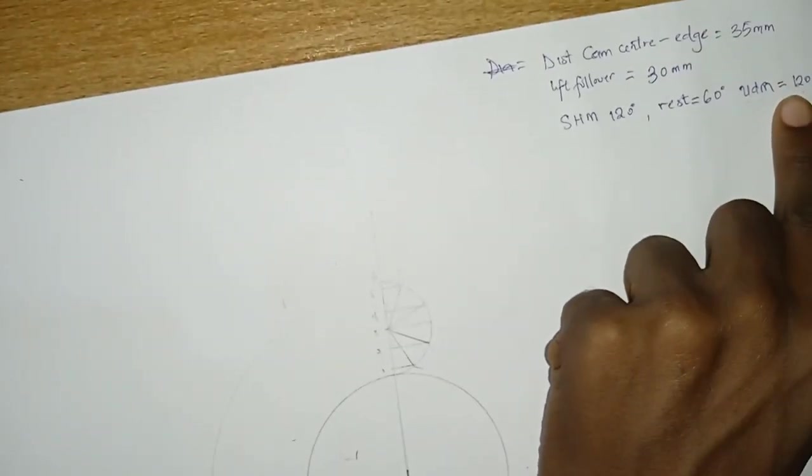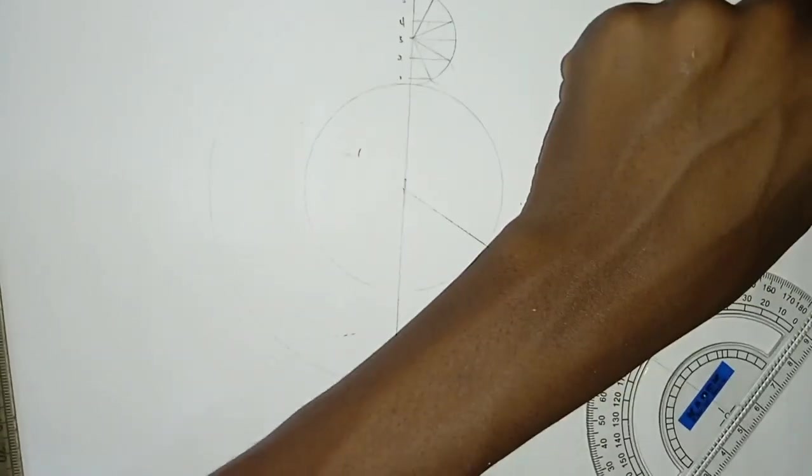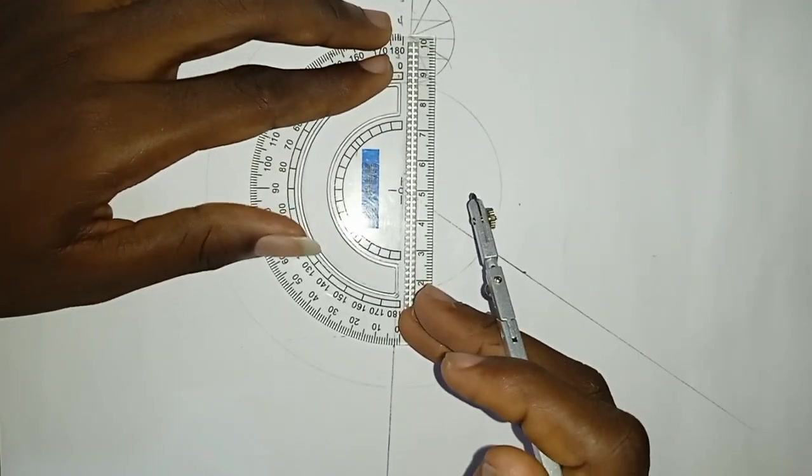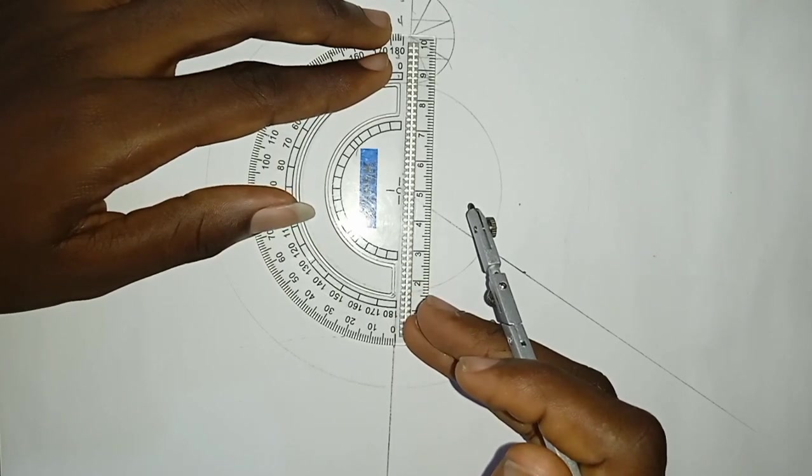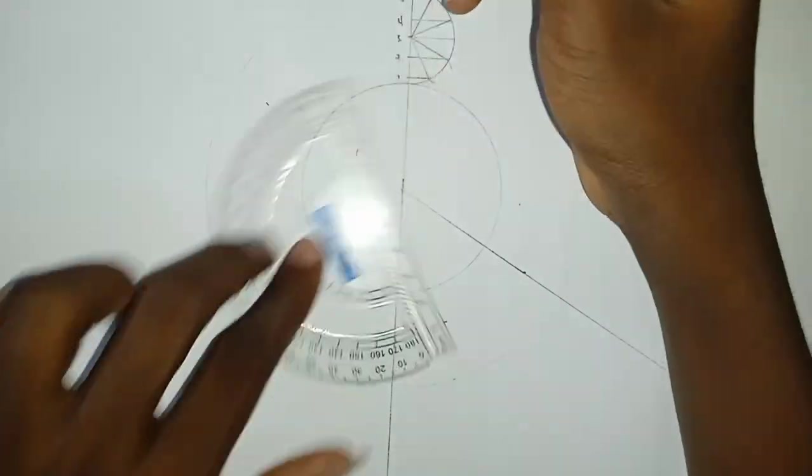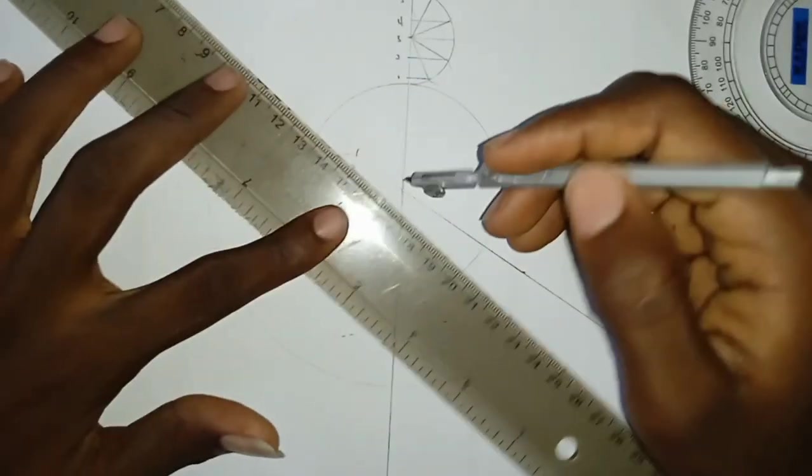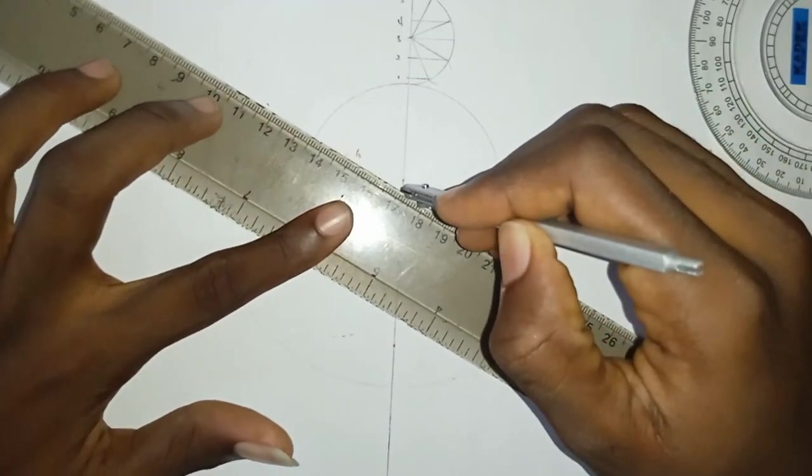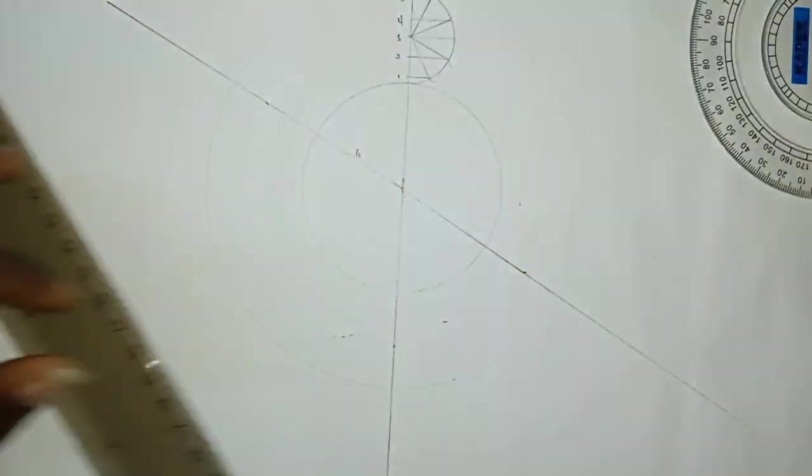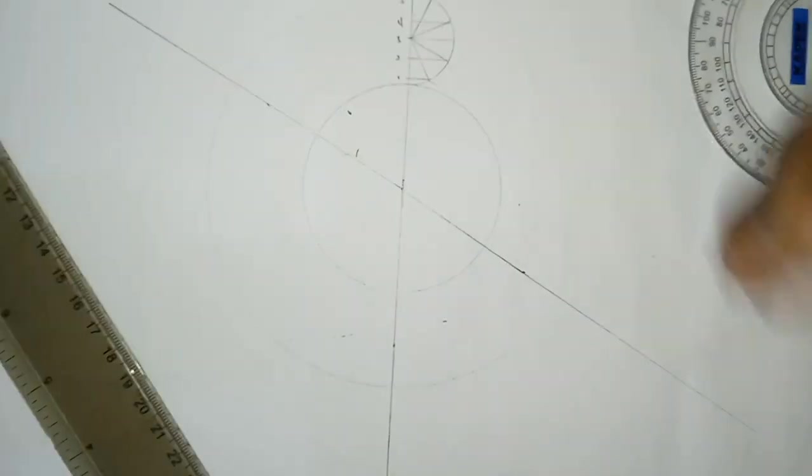The next is a UDM, uniform accelerating motion, 120 degrees. And then I put it this way. 120 degrees.